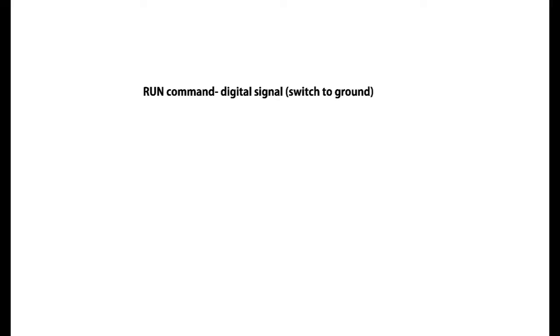The VFD however requires two signals: a digital signal to tell the spindle to run, and an analog voltage — either 0 to 5 or 0 to 10 volts — to say what speed you require. So we have to drive both of these signals from the GRBL pulse stream.